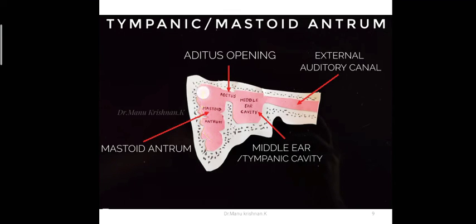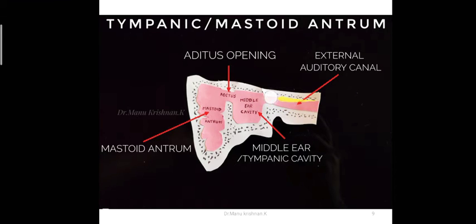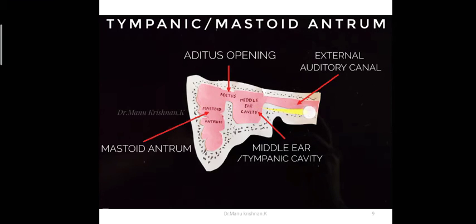The mastoid antrum opens via the aditus into the middle ear cavity. There is an interesting way to remember the structure: this whole apparatus can be compared to a handgun — the handle is formed by the mastoid antrum, the trigger area by the middle ear cavity, and the outlet is the external auditory canal. This analogy helps you remember and draw the structure.